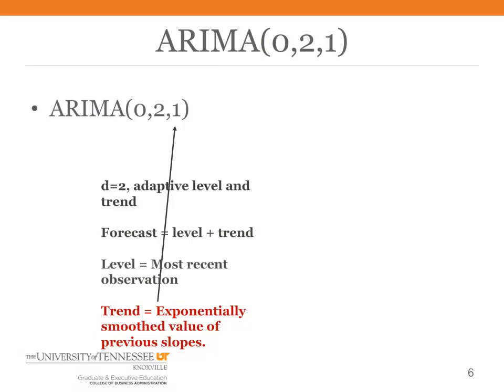In ARIMA terminology, the ARIMA(0,2,1) means the D equal to 2 means that both the level of the process and the trend adapt over time. And the forecast will be the level plus the trend just as it was with the ARIMA(0,2,0).